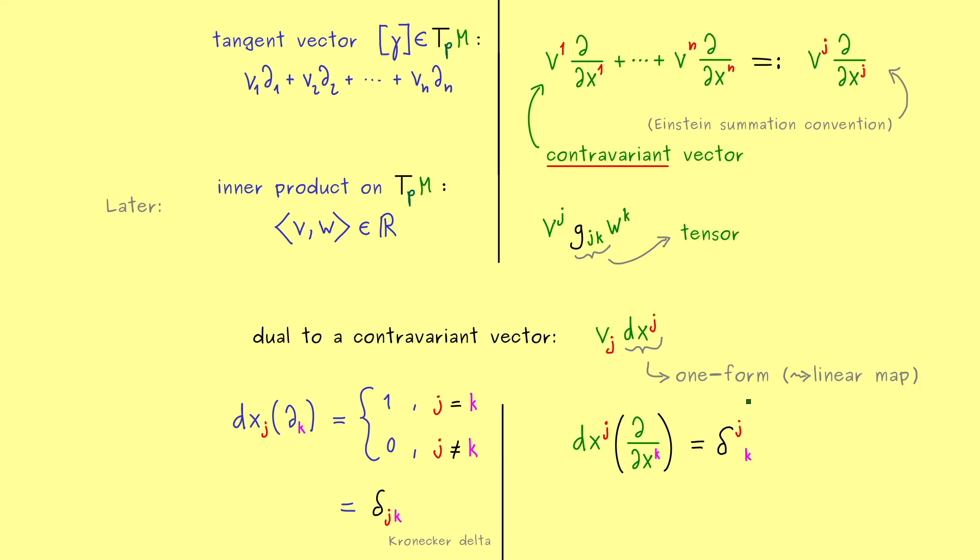Now I think that's enough for calculating with indices for the moment. In the next video I want to define such one-forms here. And as you already see it here, we will define it as linear maps going from the tangent space to R. Then let's meet in the next video and have a nice day. Bye bye.